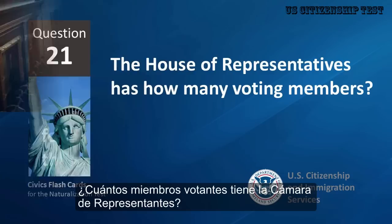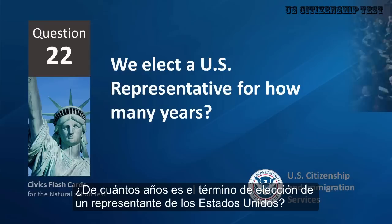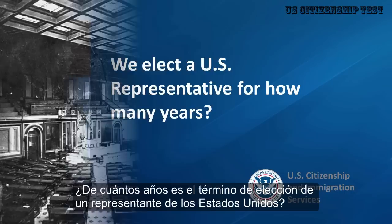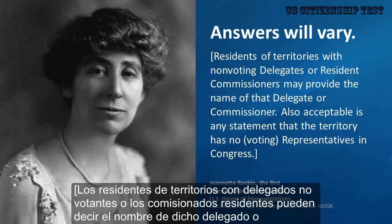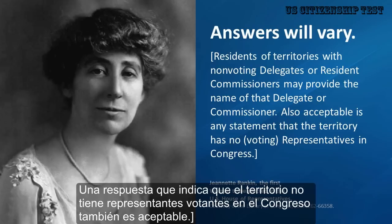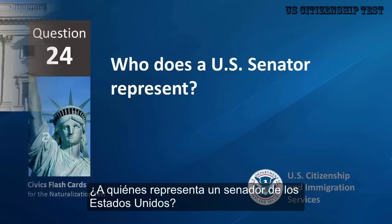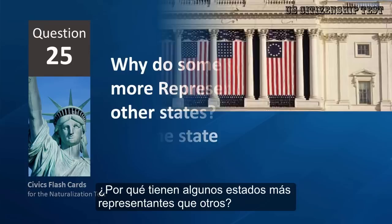The House of Representatives has how many voting members? 435. We elect a U.S. Representative for how many years? 2. Name your U.S. Representative. Answers will vary. Who does a U.S. Senator represent? All people of the state.